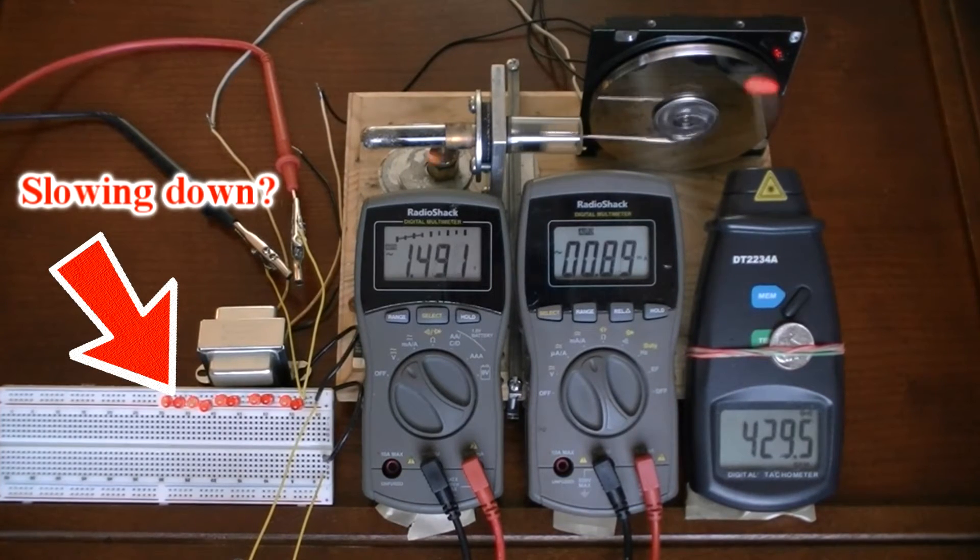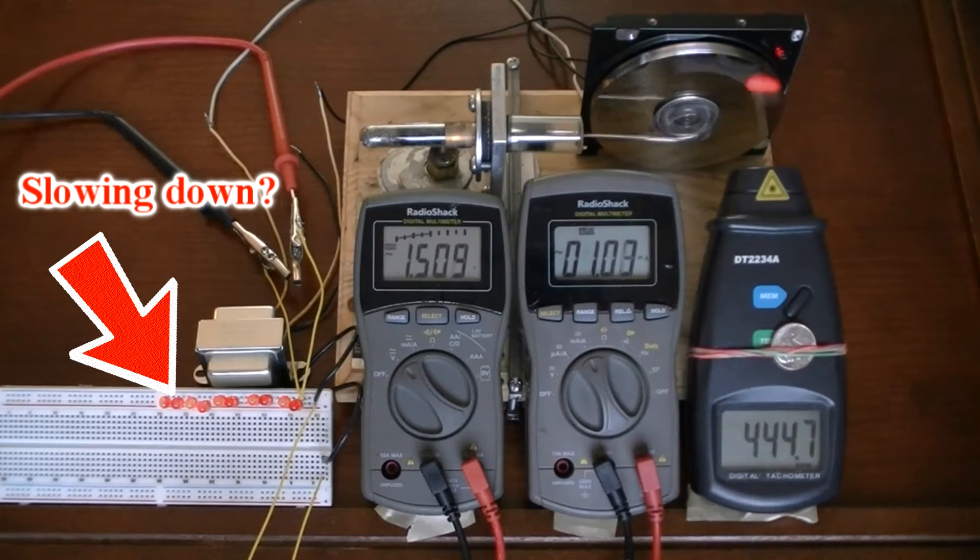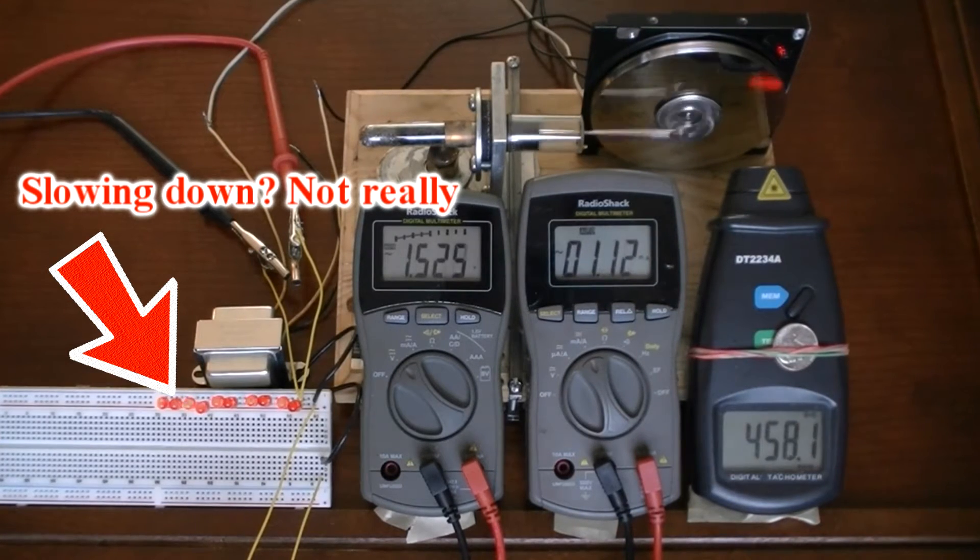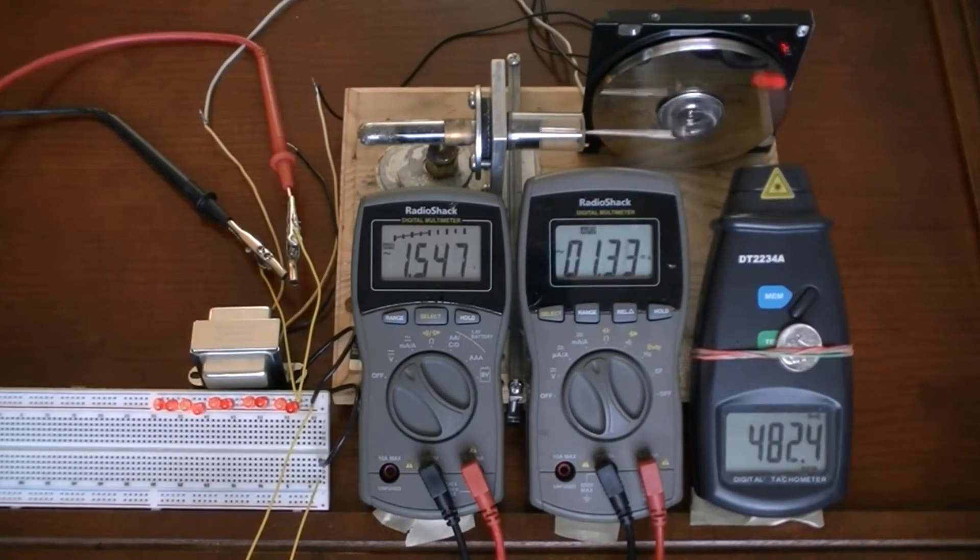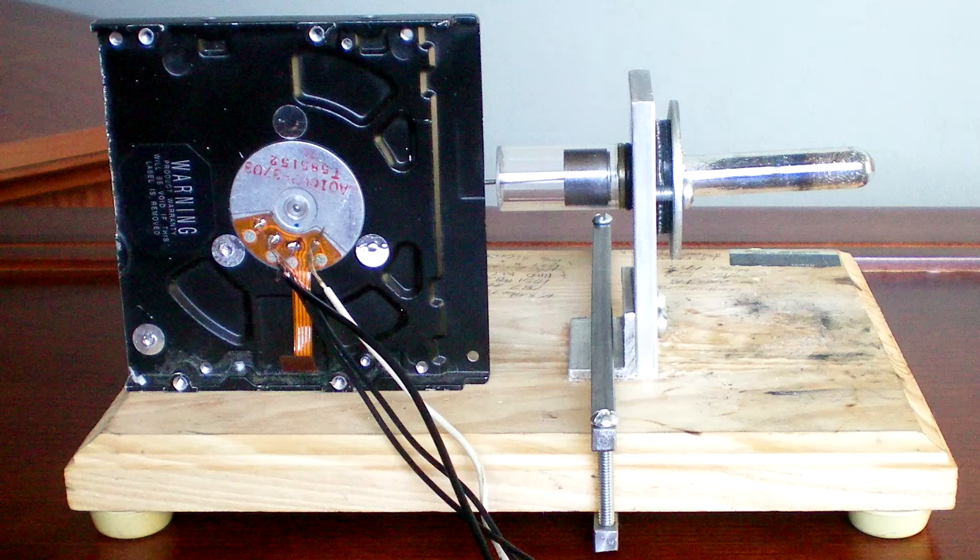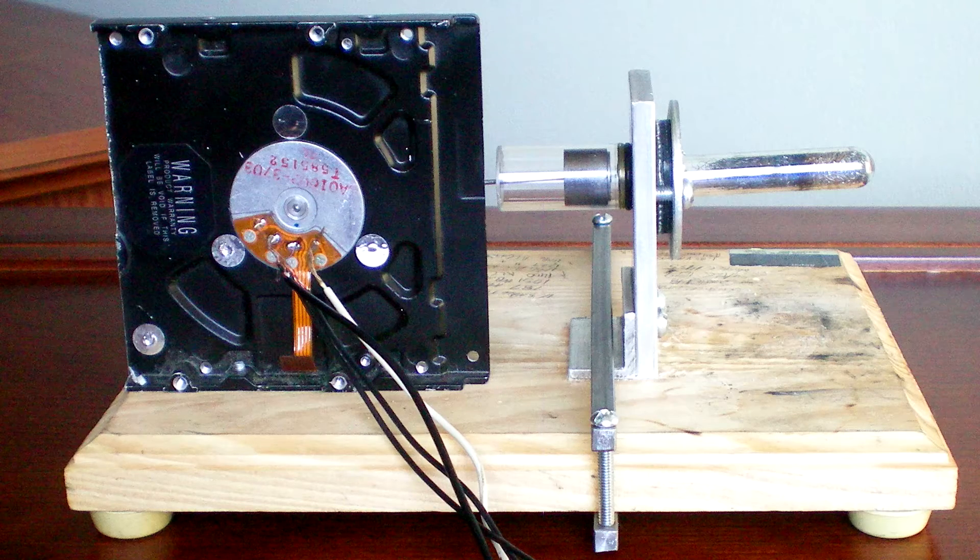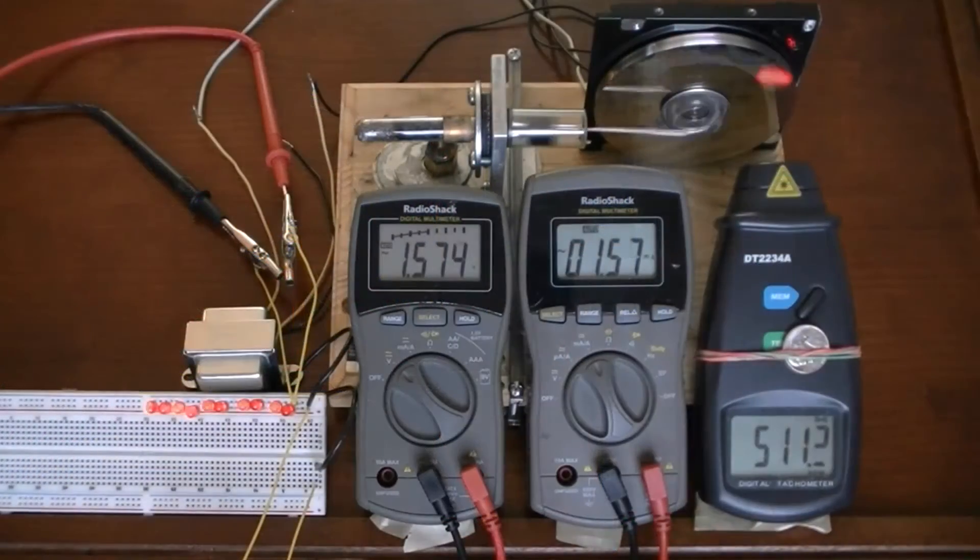This video was recorded at 29.9 frames per second, which causes these lights to appear to blink in strange ways. Using a hard drive like this produces three-phase alternating current. I am only connected to one of those three phases.